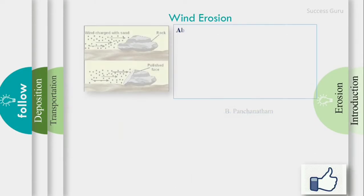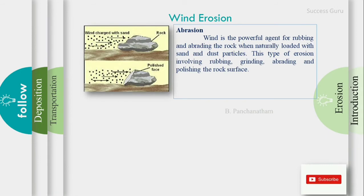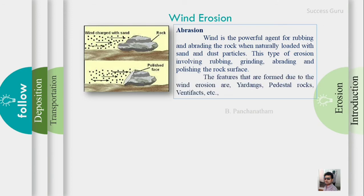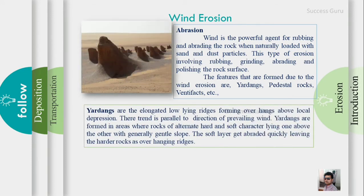The next process is abrasion. Abrasion involves fine sand and dust acting as tools. The abrasion process produces features including yardangs, pedestal rock, and ventifacts. The first feature is yardangs. A yardang is a low-lying ridge.